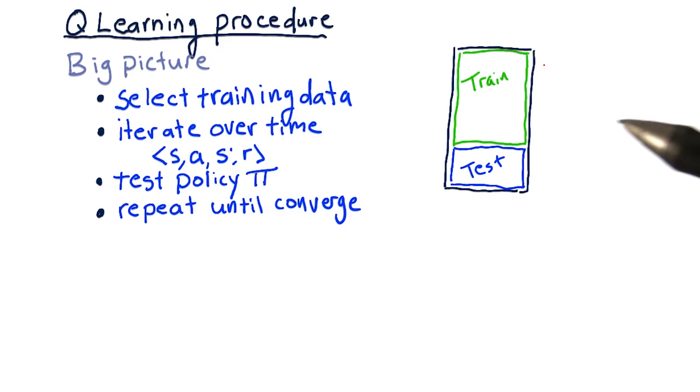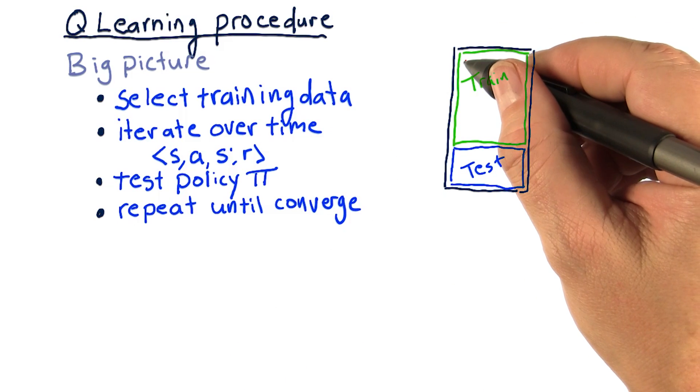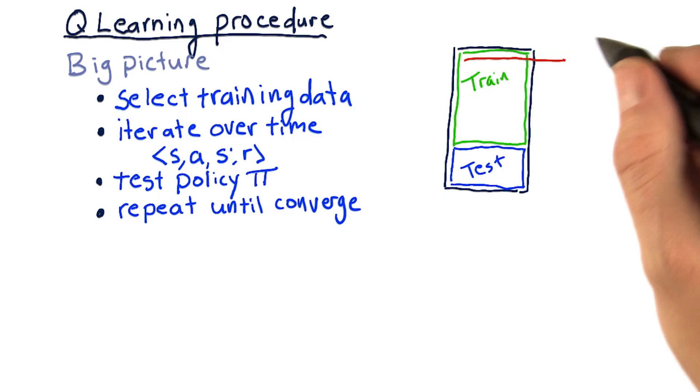So we select the data we want to train on and then we iterate over this data over time. We evaluate the situation there. And for a particular stock, that gives us S, our state.